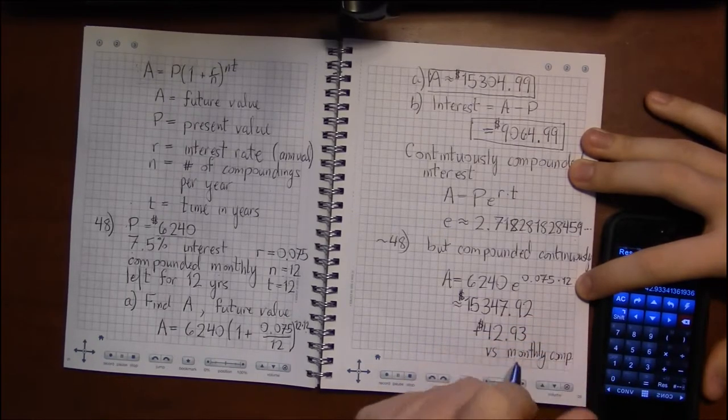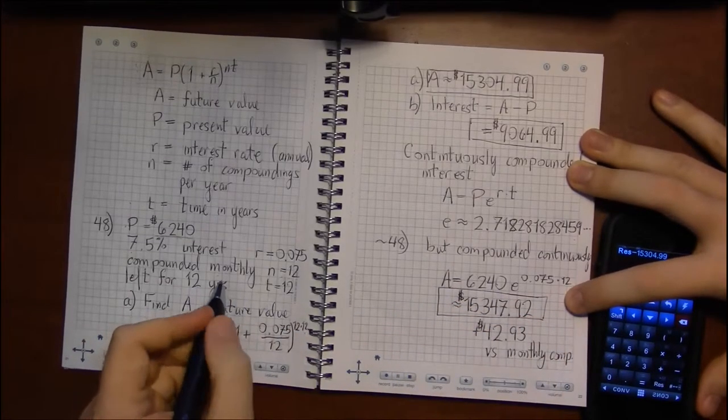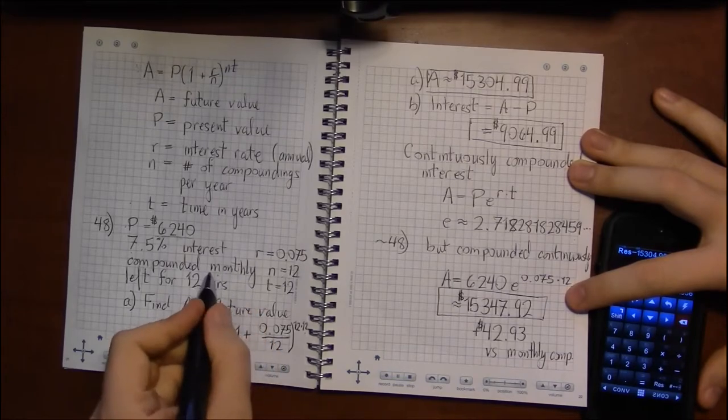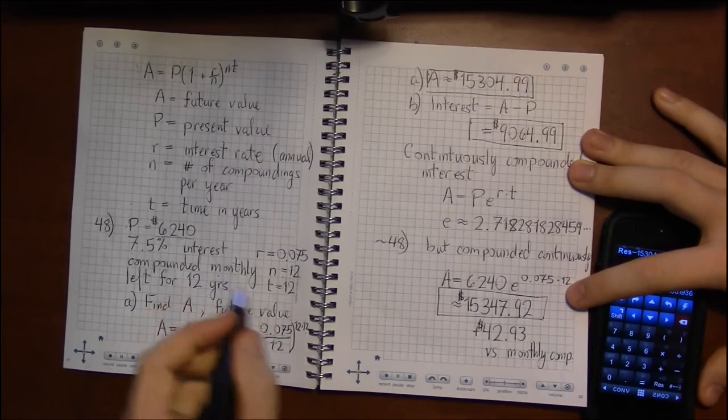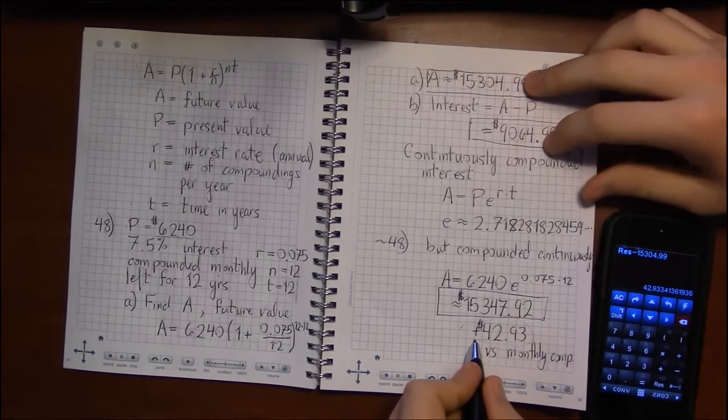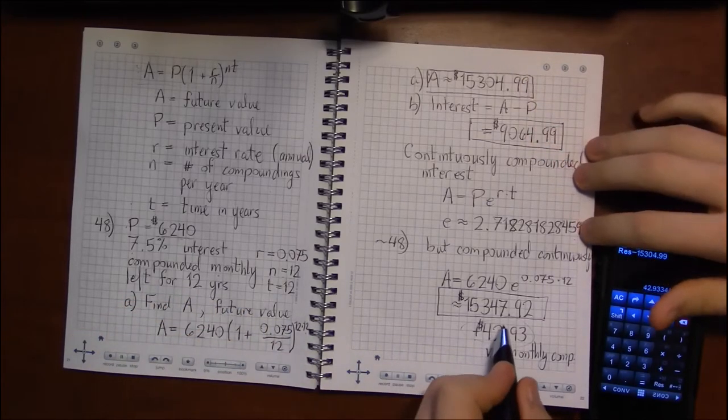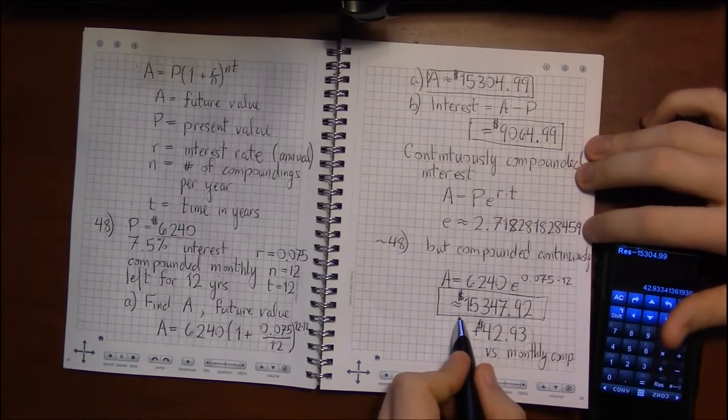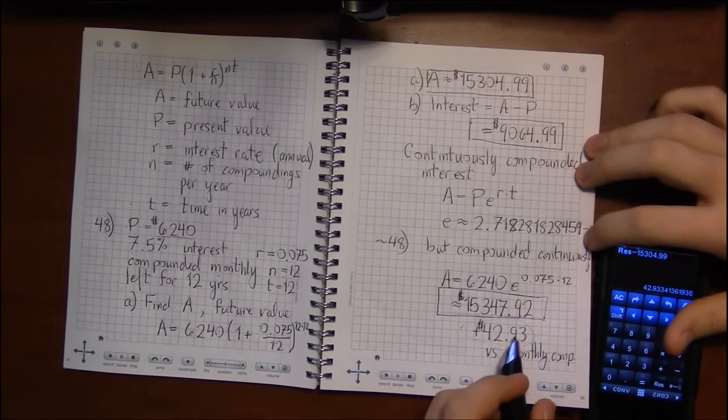And if you repeated this, but with shorter and shorter compoundings, if you compounded every day, every minute, every hour, or every hour, then minute, then second, and you kept going, you'd shrink this difference down between compounding a finite number of times per year, and you'd get closer and closer to this number, which represents compounding continuously at every single moment in the year.